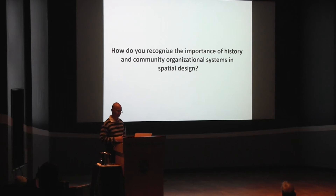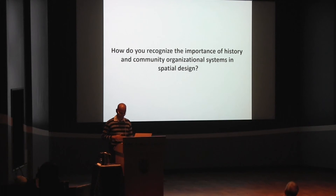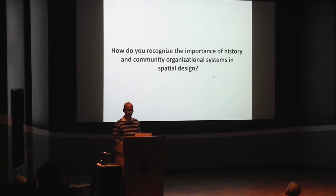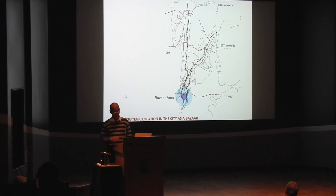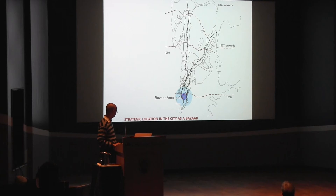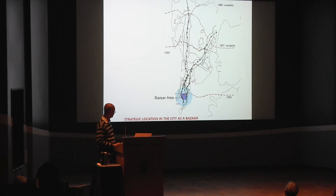The first question we were asking was: how do you recognize the importance of history and community organization in spatial design? The second research project we were doing was on tenanted properties in the historic area of Mumbai. This is the historic district of the city — where the British built their settlement, and just north of it is the indigenous settlement. Extremely networked, because both were interdependent: a lot of trade happened through the indigenous settlement, buying goods from the hinterland that the British would trade.